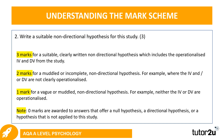With a non-directional hypothesis you're stating there will be a difference between the two groups, but you don't necessarily know what direction that difference will be. A null hypothesis means there will be no difference. So with a non-directional hypothesis, the key language to use is something to do with 'there will be a difference between the two groups.'